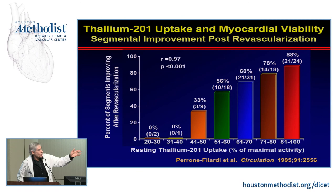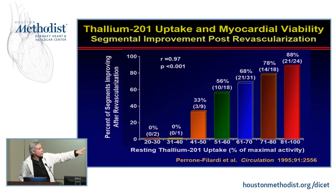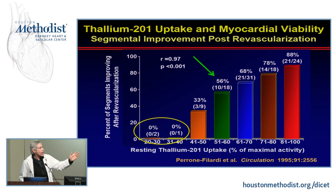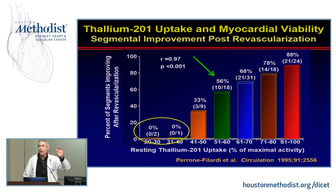Most of this data comes from rest studies because in the early days, heart failure patients were too ill to exercise. Rest thallium imaging showed a spectrum: from very little tracer uptake indicating no viability, to increasingly higher tracer concentration correlating with increasing likelihood of detecting viability. Once above 50 to 60% of normal tracer activity, you are more likely to identify viable tissue. This spectrum applies to all techniques including MRI.